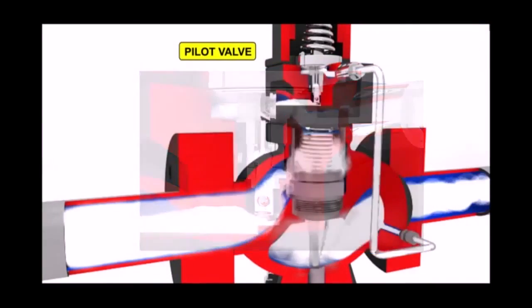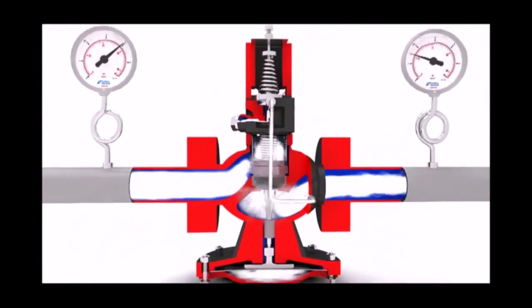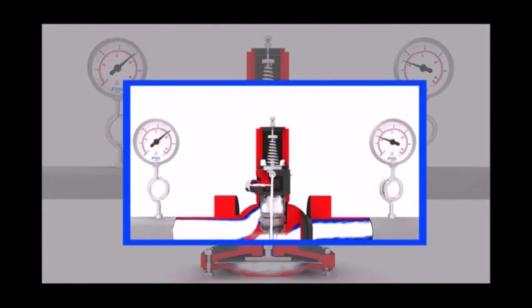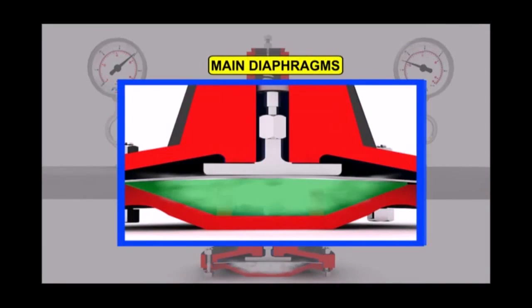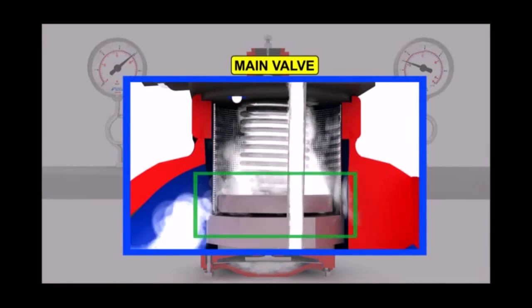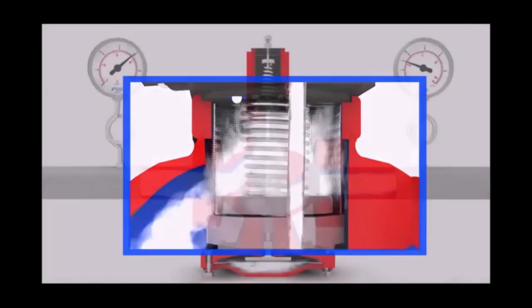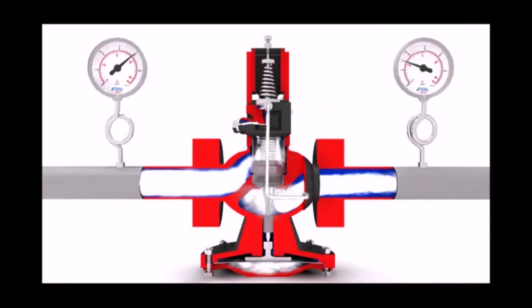Steam passing through the throttled pilot valve maintains controlled steam pressure under the main diaphragm and positions the main valve to pass just enough steam to achieve the desired downstream pressure.